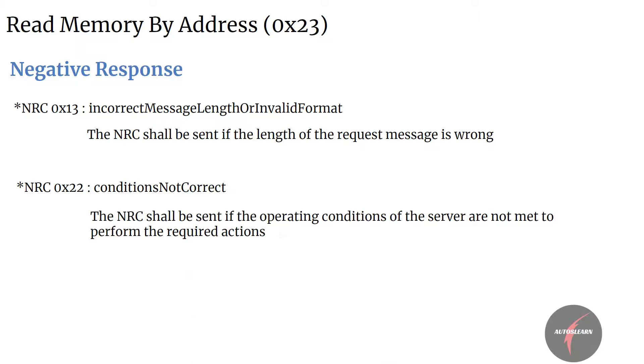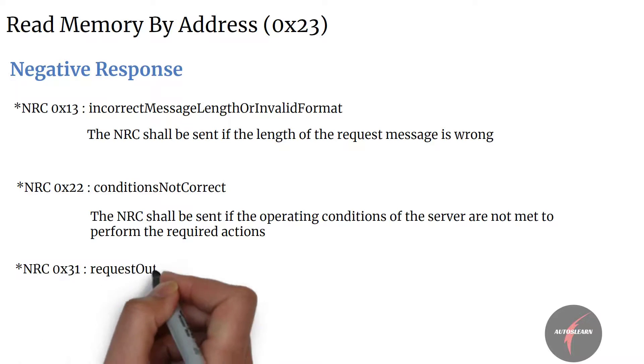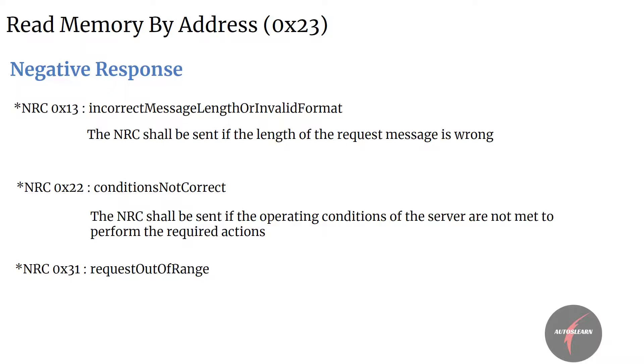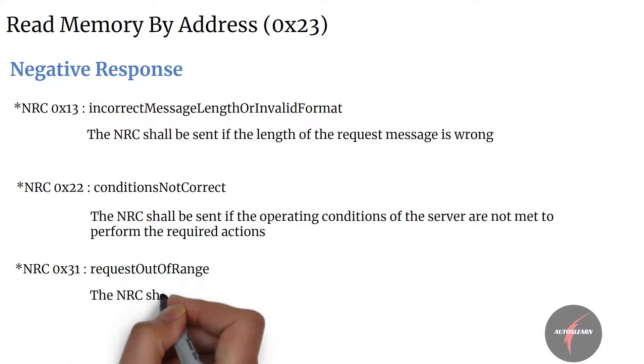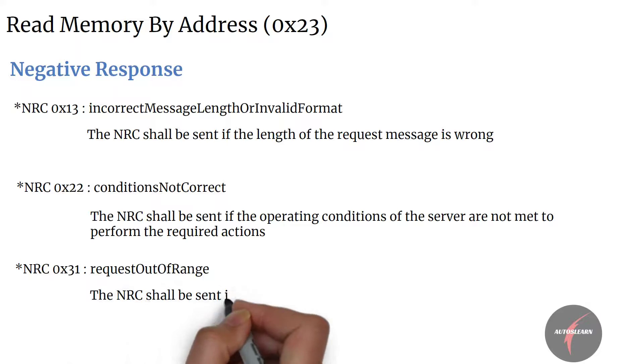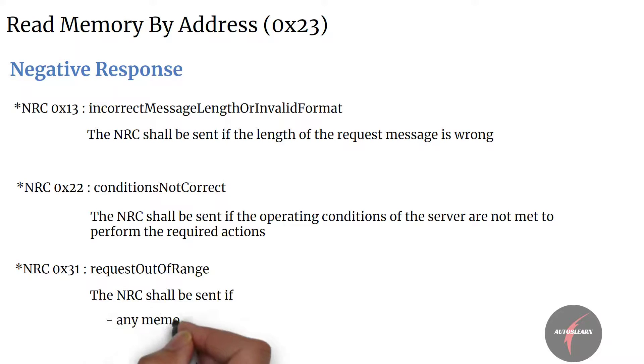NRC 0x22 Conditions Not Correct: this NRC shall be sent if the operating conditions of the server are not met to perform the required actions. NRC 0x31 Request Out of Range: this NRC shall be sent if one of the following conditions is true.